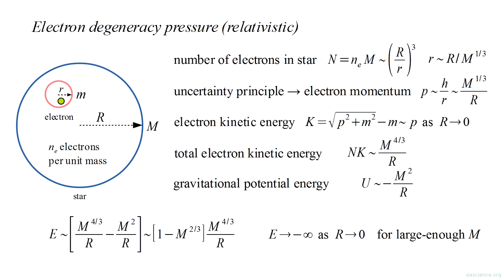However, if the mass is large enough, the constant will be negative, and the energy will approach negative infinity as the radius approaches zero. That is, the star will undergo gravitational collapse.